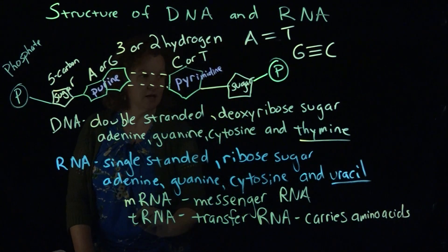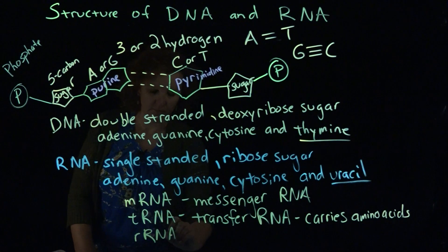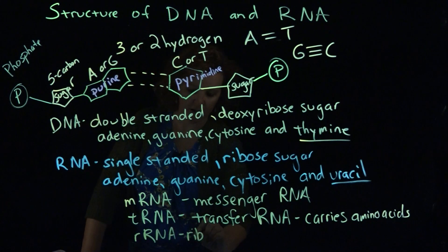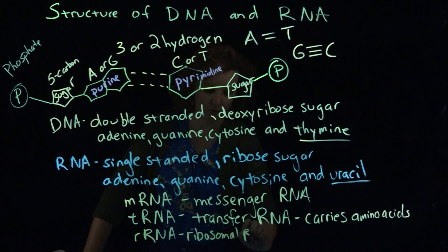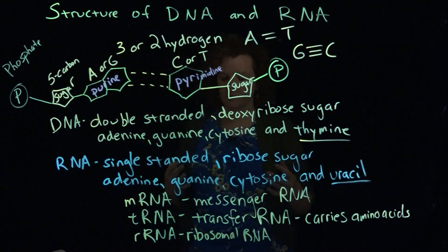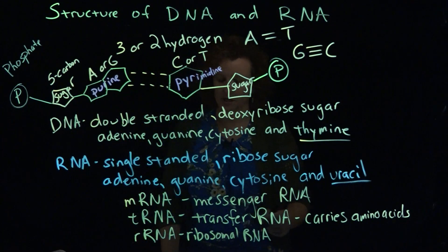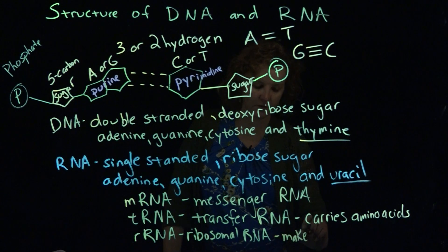And a third common type is rRNA, that's ribosomal RNA. When you've learned about the ribosomes, you might not have thought a whole lot about what makes up the ribosomes, but a big component of that is ribosomal RNA. So it actually makes up the ribosomes, along with some proteins.